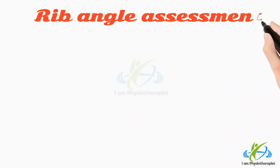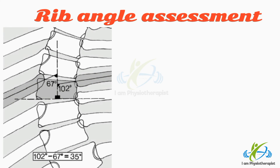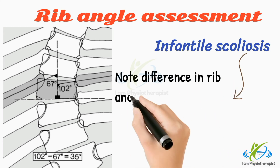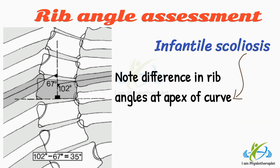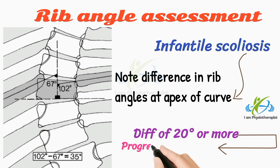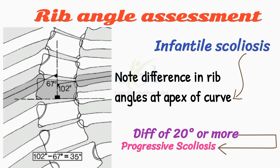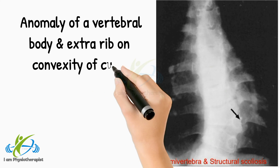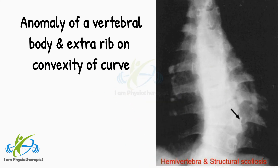Rib angle assessment: In infantile scoliosis, note the difference in rib angles at the apex of the curve by the shown construction. A difference of 20 degrees or more must be regarded as indicating a potentially progressive scoliosis. This radiograph shows a dorsal scoliosis associated with an anomaly of a vertebral body and an extra rib on the convexity of the curve.